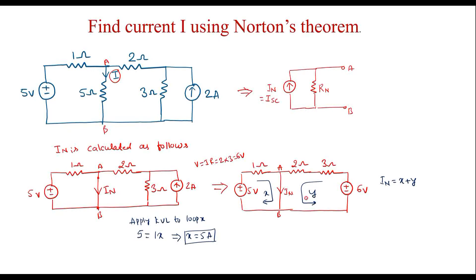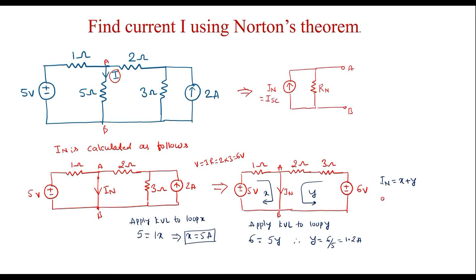Similarly, applying KVL to loop y, I can write 6 equals 5y. Therefore, y equals 6 divided by 5, which equals 1.2 amps. So, In equals 5 plus 1.2, that is In equals 6.2 amps. This is Norton's current or short circuit current — it is 6.2 amps.